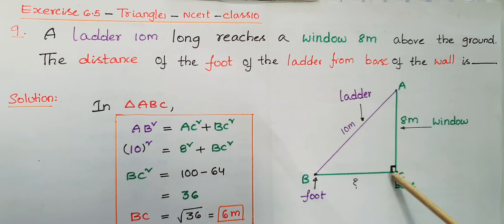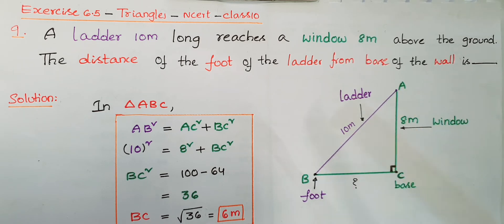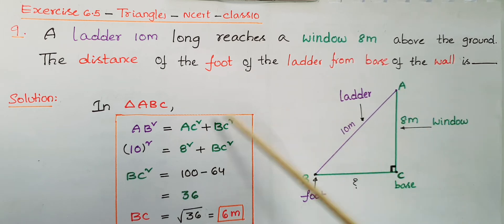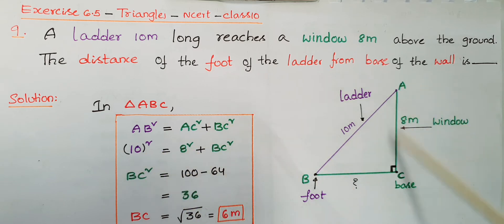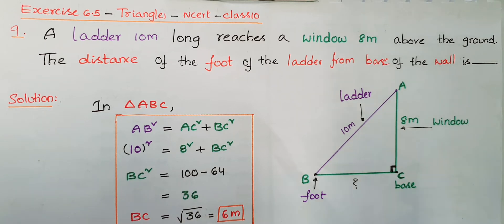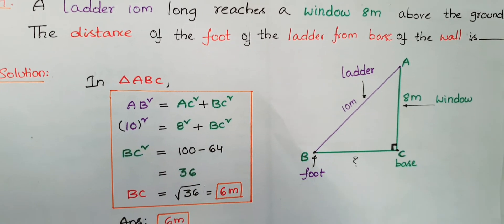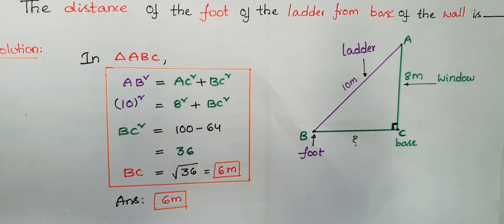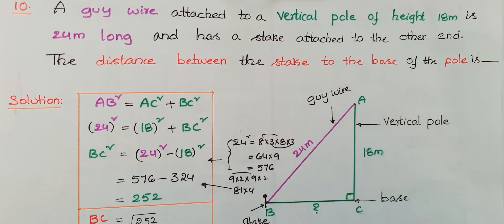This is a right triangle with a 90-degree angle, and AB is the hypotenuse. As per Pythagoras theorem: AB² = AC² + BC². So 10² = 8² + BC², giving BC² = 100 − 64 = 36, therefore BC = √36 = 6 meters. The answer is 6 meters.